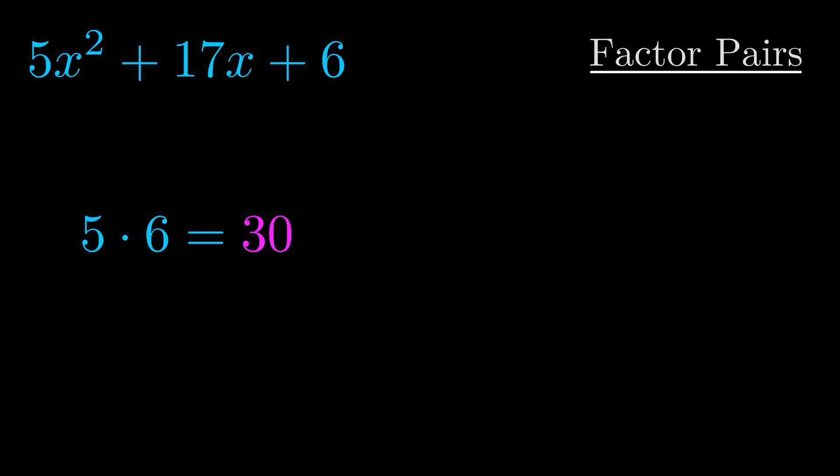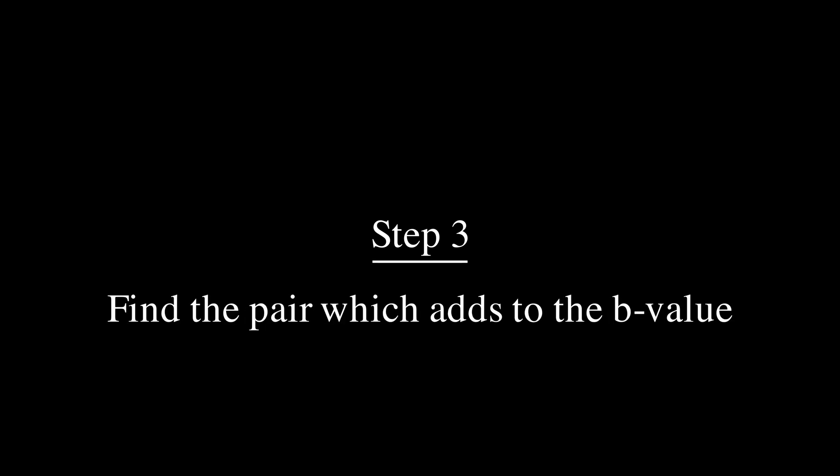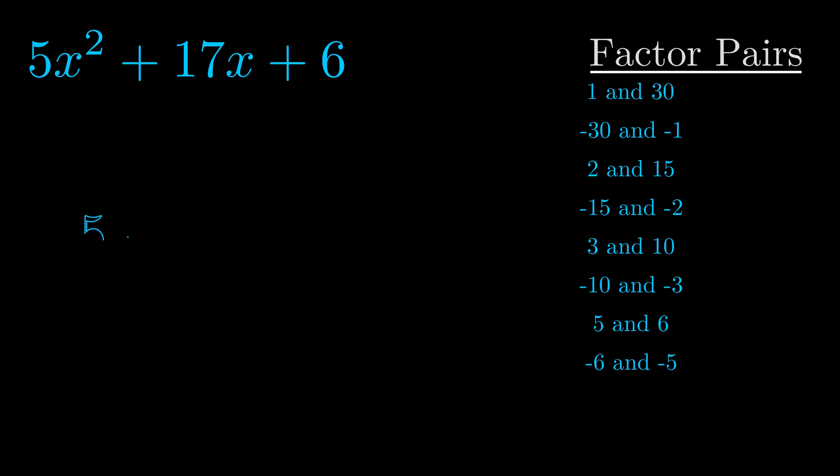Okay, here's what I came up with. Now once you have these factor pairs, the goal is to find which of these pairs adds to the b value. The b value is the coefficient on the x term—that's the middle term, the one that we haven't done anything with yet. And really, this is the only factor pair that we need.